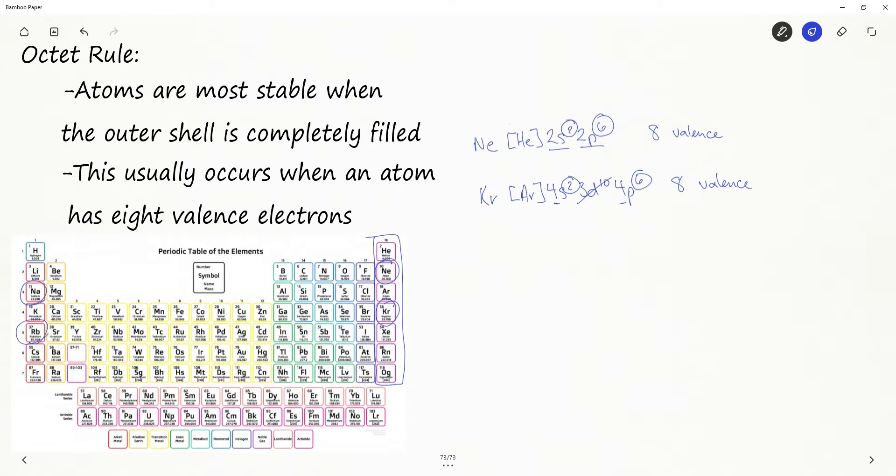So you can guess that all the noble gases have a full outer shell and are probably going to have eight valence electrons.